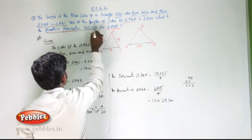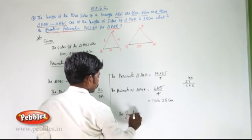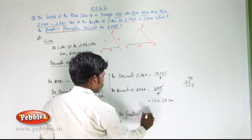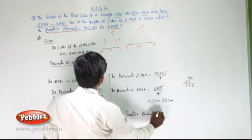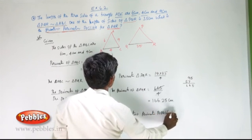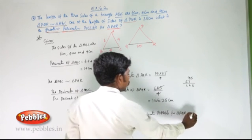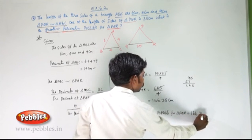Therefore, the greatest perimeter possible for triangle PQR is 166.25 cm.